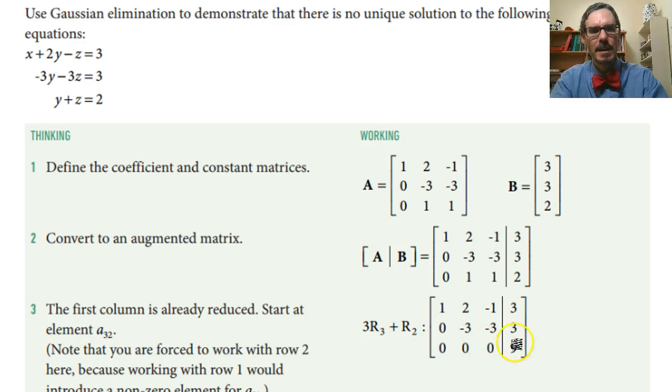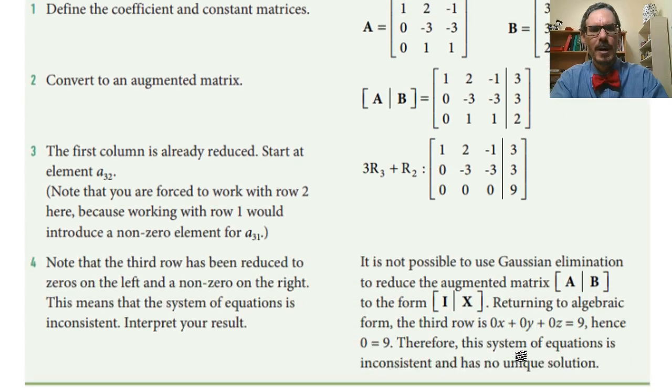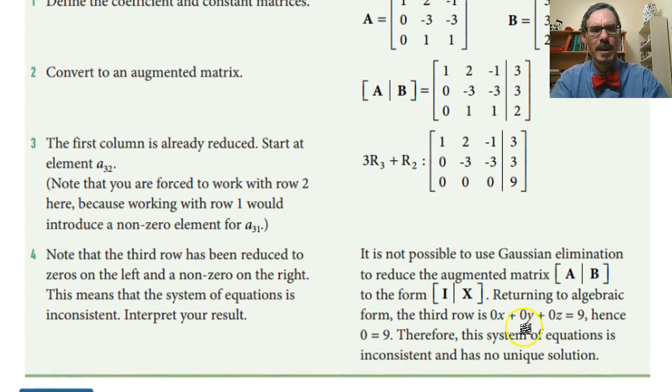Think about what this says. This says 0x plus 0y plus 0z equals 9. Wait a minute. 0x plus 0y plus 0z equals 9 is impossible.